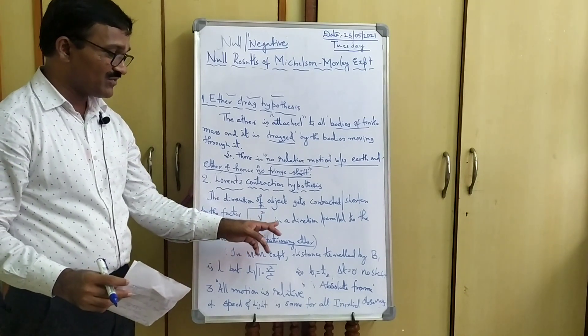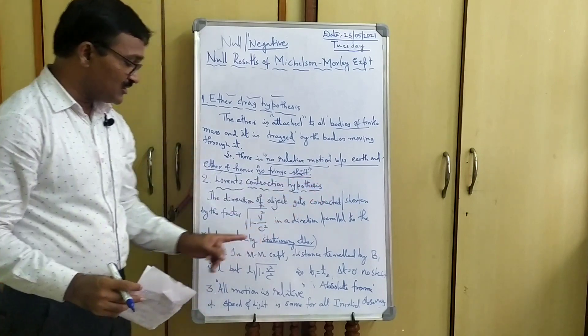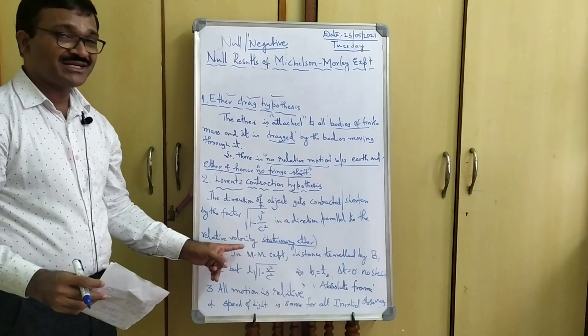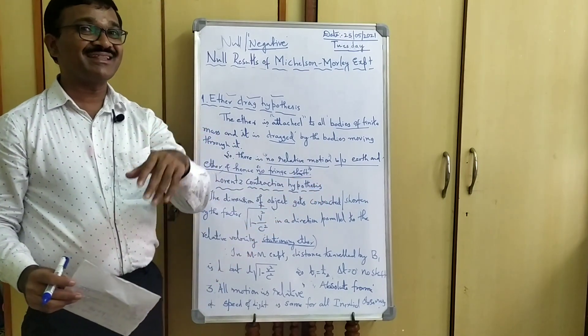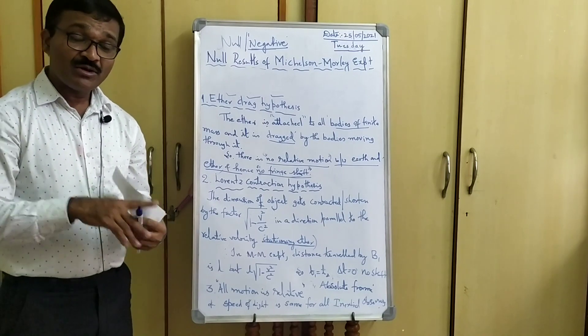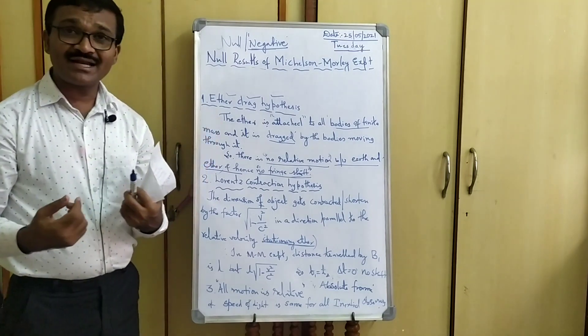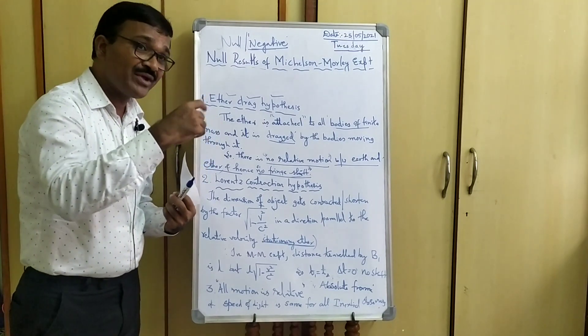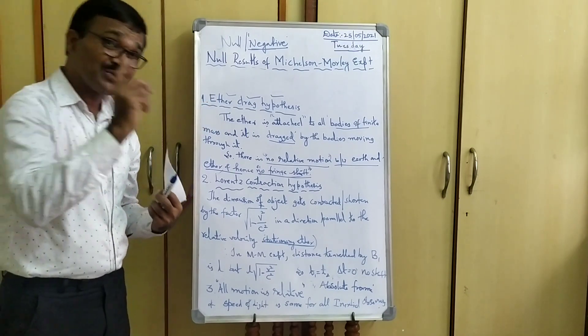1 minus v squared by c squared in the direction parallel to the relative velocity or parallel to the stationary ether media. That means, here, according to Lorentz Contraction hypothesis, the dimension of the moving object is going to contract.